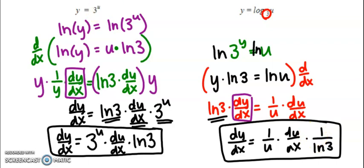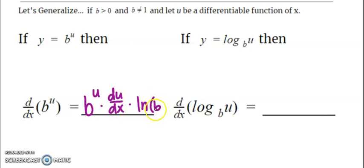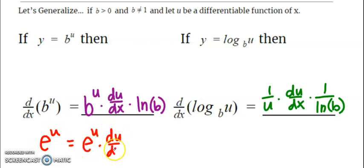Just like with exponentials — when the base was e, the derivative stays the same times the derivative of the exponent. Here it's the same, except we're also multiplying by something involving the natural log of the base. Let's generalize: if y equals b to the u, then the derivative of b to the u is itself times the derivative of the exponent times the natural log of the base. The derivative of log base b of u is 1 over the argument times the derivative of the argument times 1 over the natural log of the base.